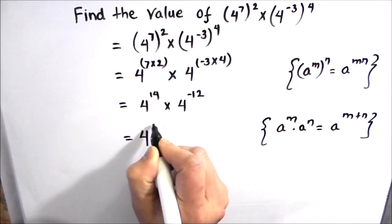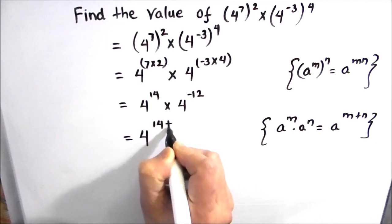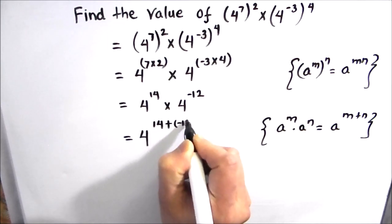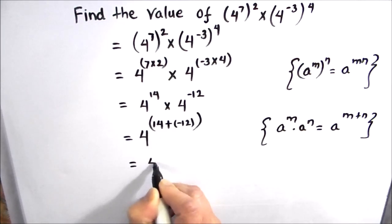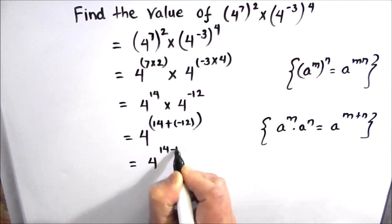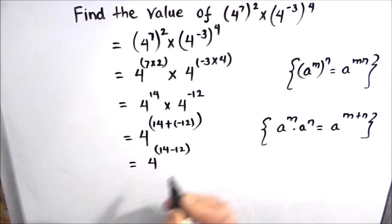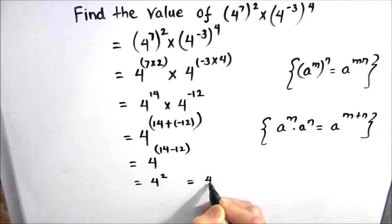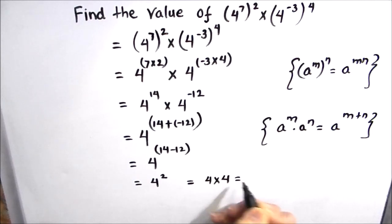This is going to be 4^(14 + (-12)), which equals 4^(14-12), which is equal to 4^2, which equals 4 × 4 = 16. So the final answer is 16.